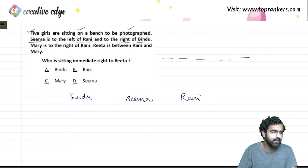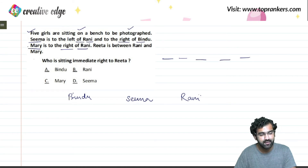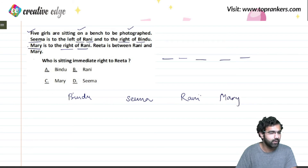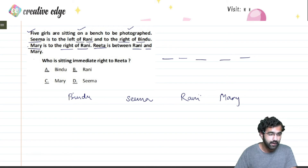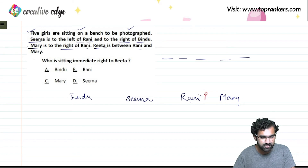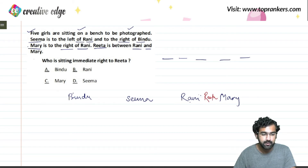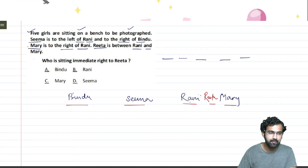Mary is to the right of Rani. So wherever Rani is, Mary is to her right. Additionally, Rita is between Rani and Mary. So Rita sits between Rani and Mary. Putting it all together, the five girls are sitting in this order: Bindu, Seema, Rani, Rita, and Mary.